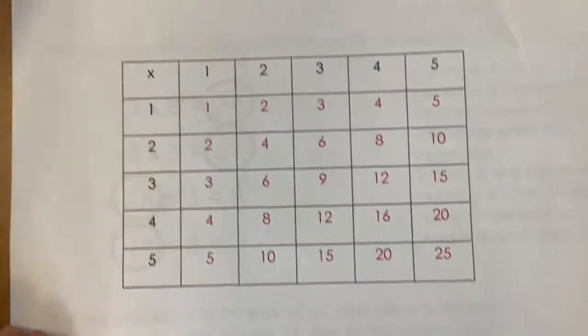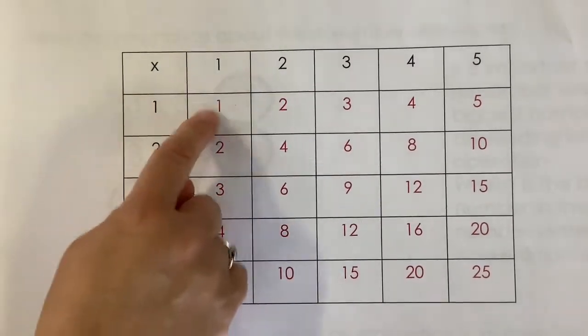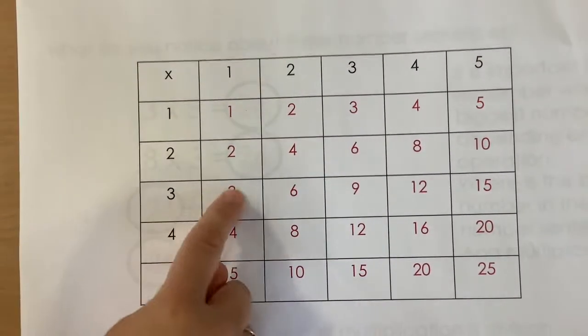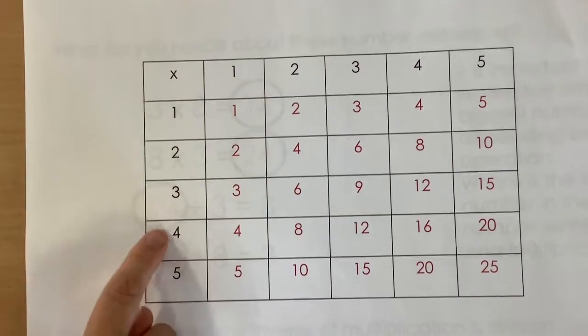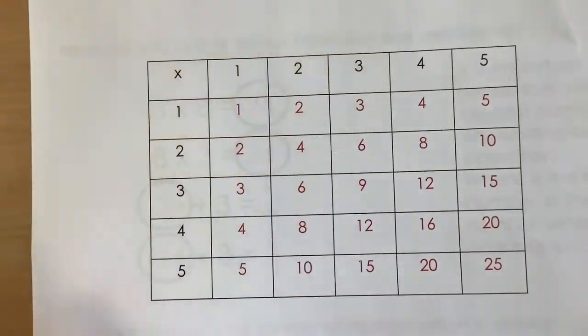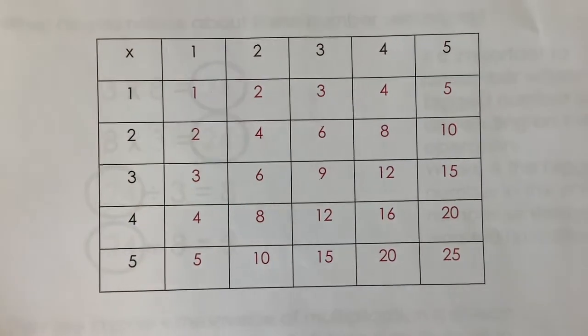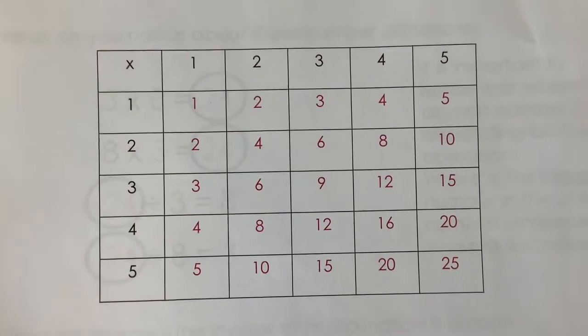It does seem complicated, but once you start to fill it in, just following the rows where they meet. 1 times 3 or 3 times 1. 4 times 2 is 8. Hopefully you'll work that out because there is a task later on that involves using a times table square.